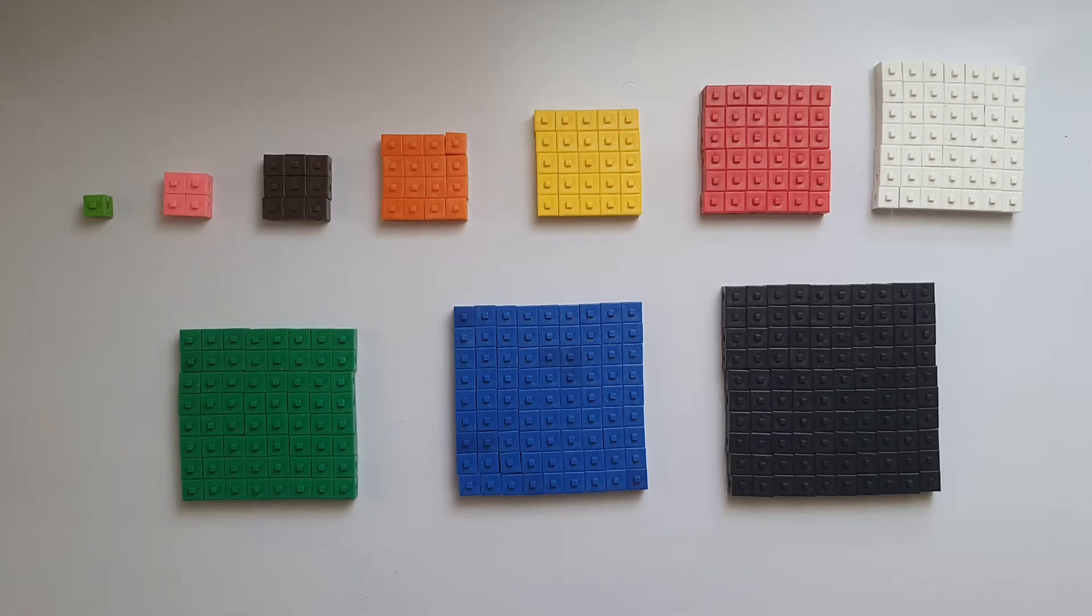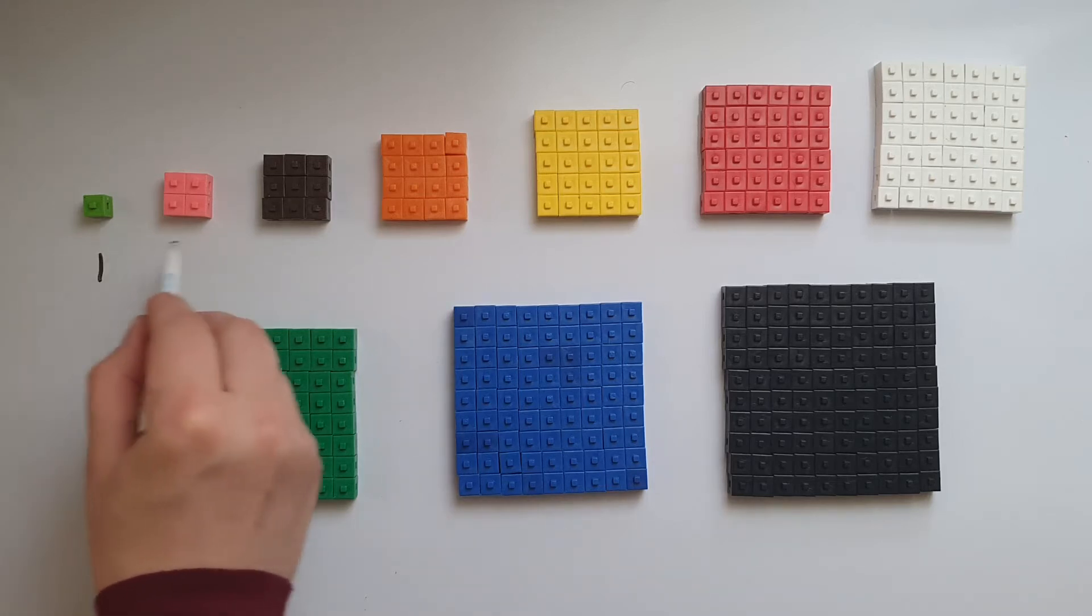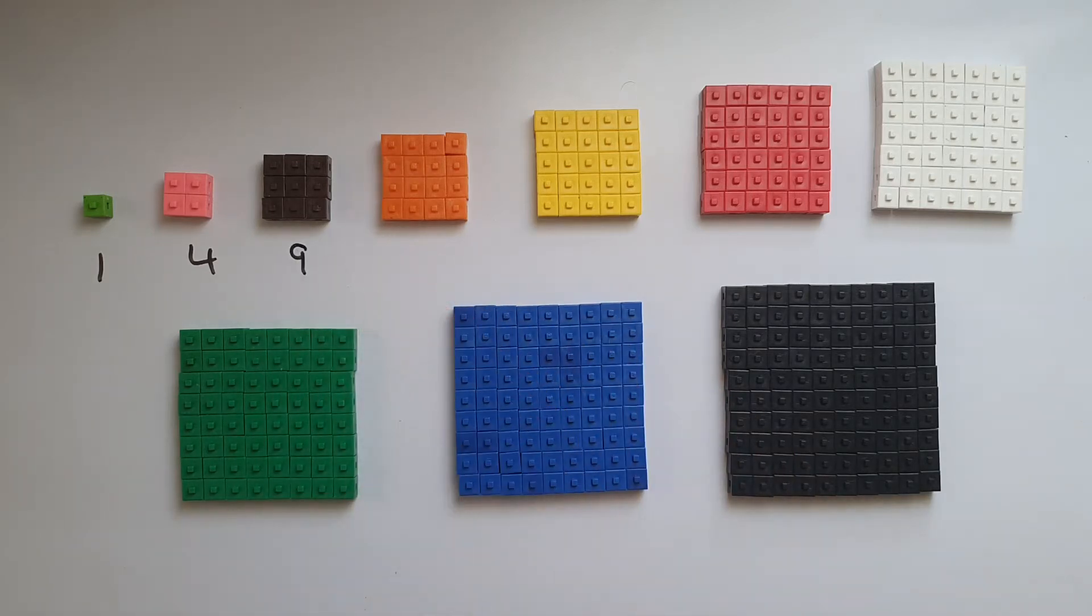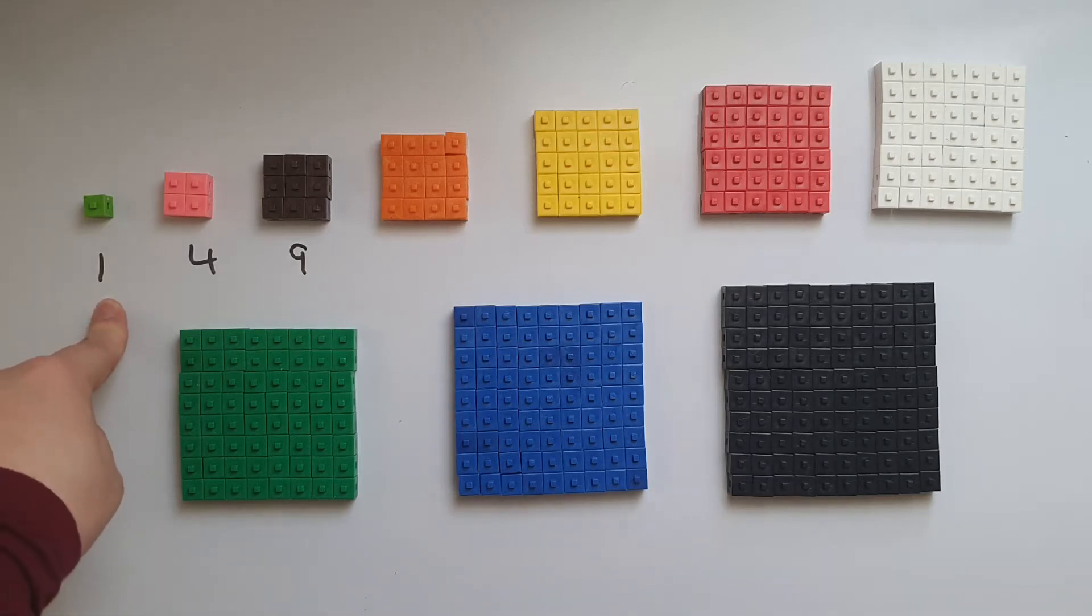So these numbers are 1, 4, 9. 1 times 1 gives us 1. Think of a square with dimensions 1 by 1 centimetre. The area is gonna be 1 centimetre squared.